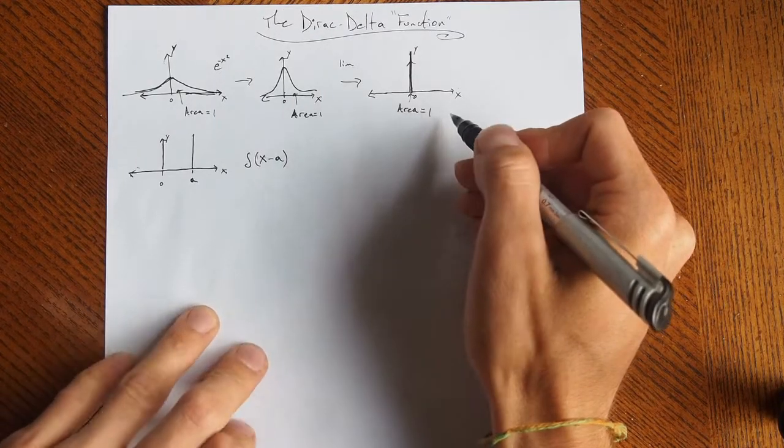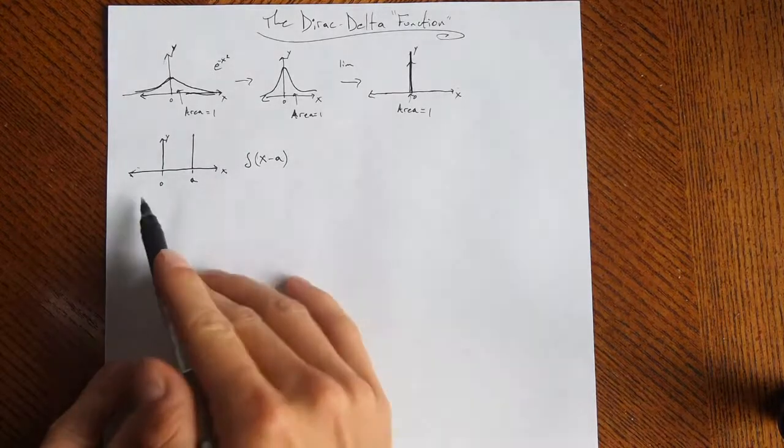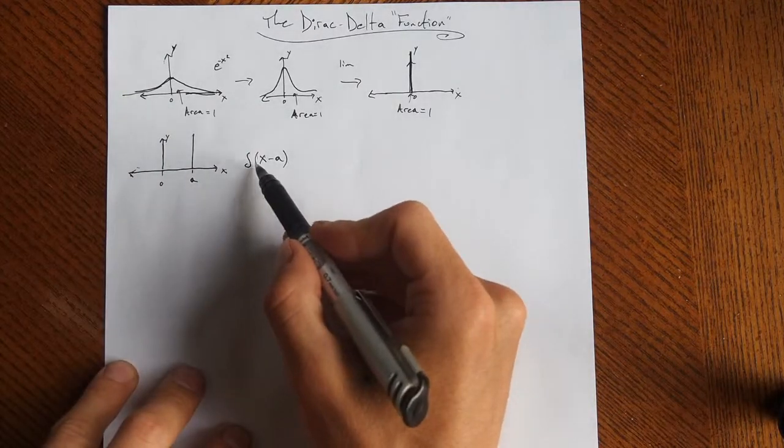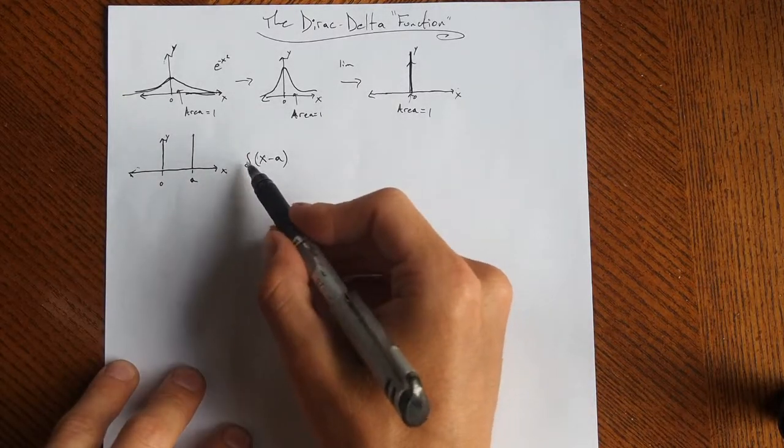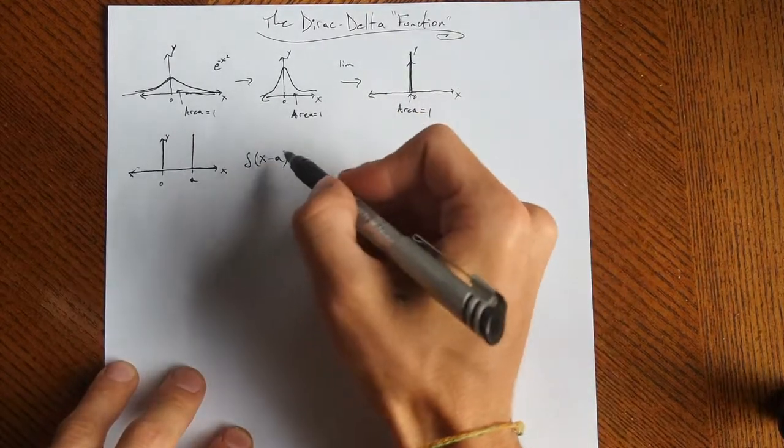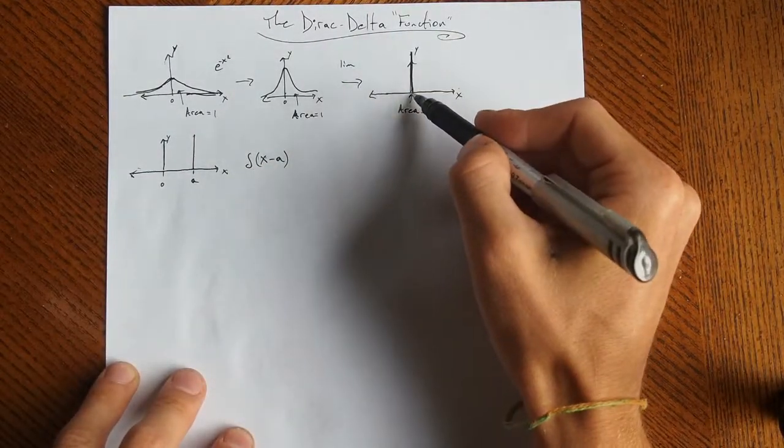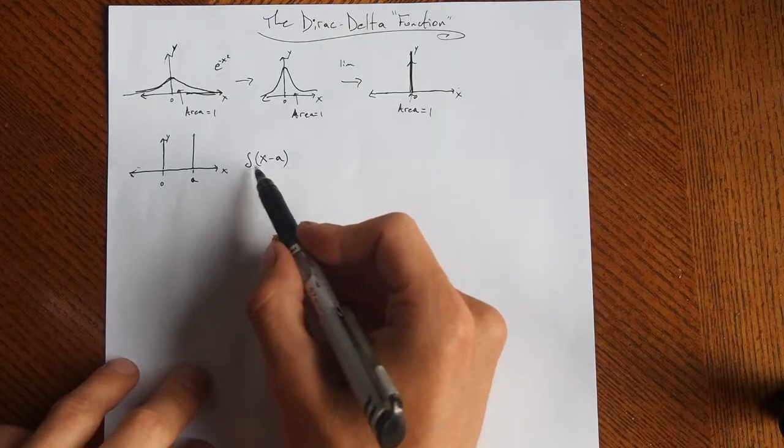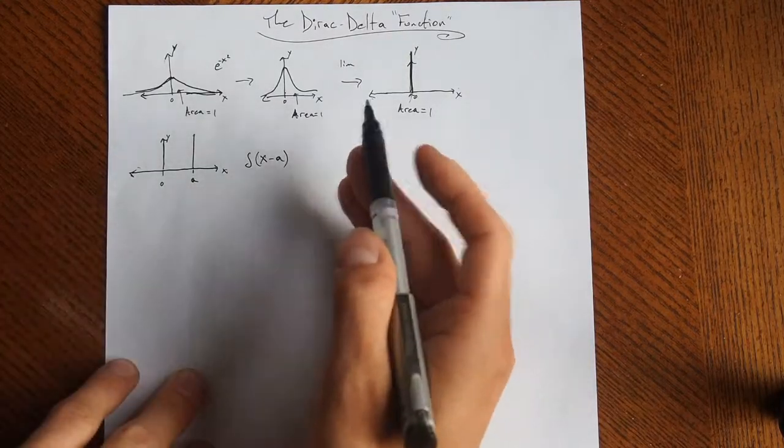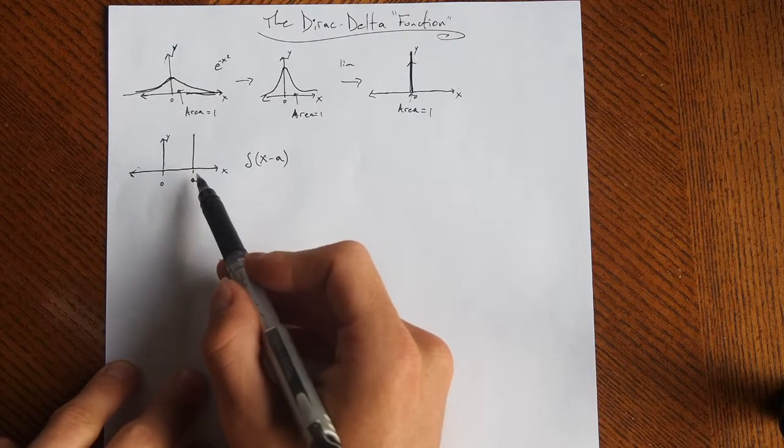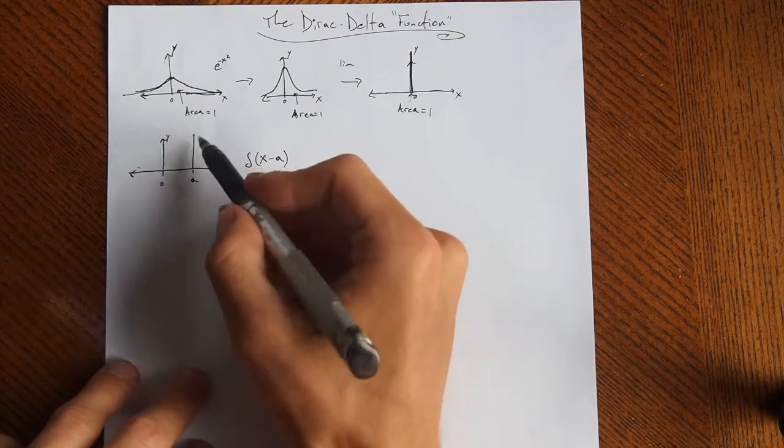Now, what does that area equal to 1 have to do with it? Well, here is the delta function, this is the symbol. If it's just delta of x, in that case a would be zero, so you'd have it right in the middle on the origin. A more general way to put it would be delta of x minus a. It just shifts it a along the x-axis, and you have this infinitely thin line.